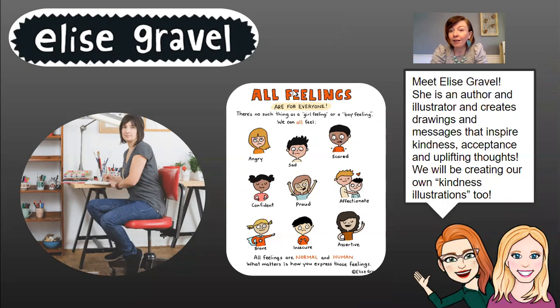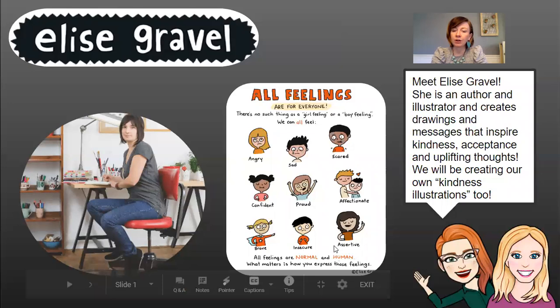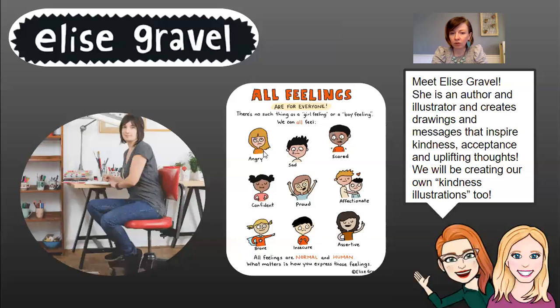In this illustration that Elise Gravel made, she is communicating that all feelings are for everyone. She's not only writing her message but also drawing pictures to communicate it. It says there's no such thing as a girl feeling or a boy feeling. We can all feel angry, sad, scared, confident, proud, affectionate, brave, insecure, assertive. Above each word, she includes a drawing of somebody communicating that emotion.